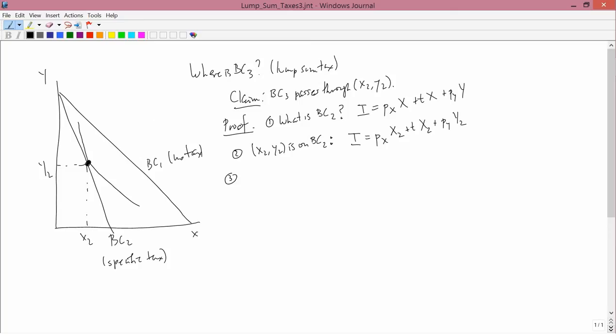Step 3: What is BC3? BC3 is the budget constraint for the lump sum tax. So, it's I minus the lump sum tax, which is the income after tax when the government imposes the lump sum tax, equals expenditures, PX times X plus PY times Y. This is a little different than the way I wrote it in the previous lesson, but it's mathematically equivalent. I just have the lump sum tax on the left-hand side with a minus sign, instead of on the right-hand side with a plus sign.